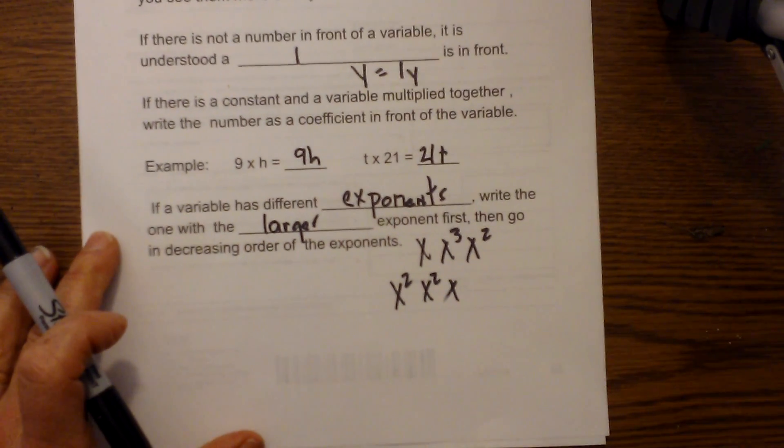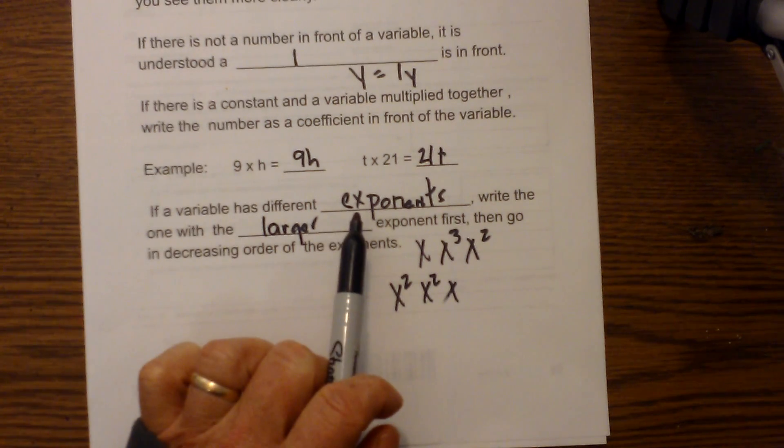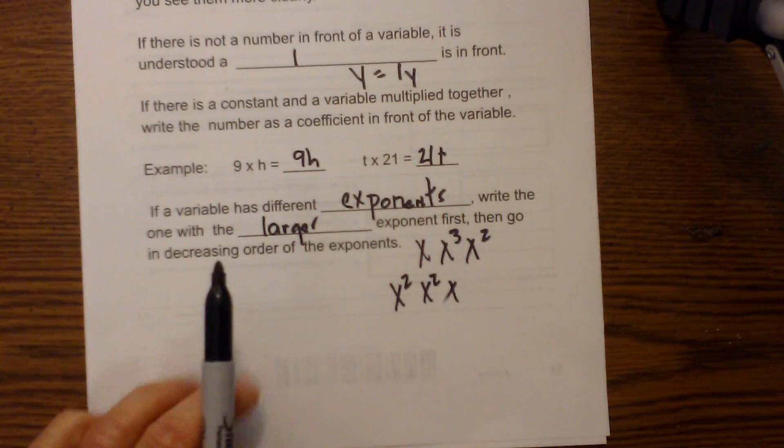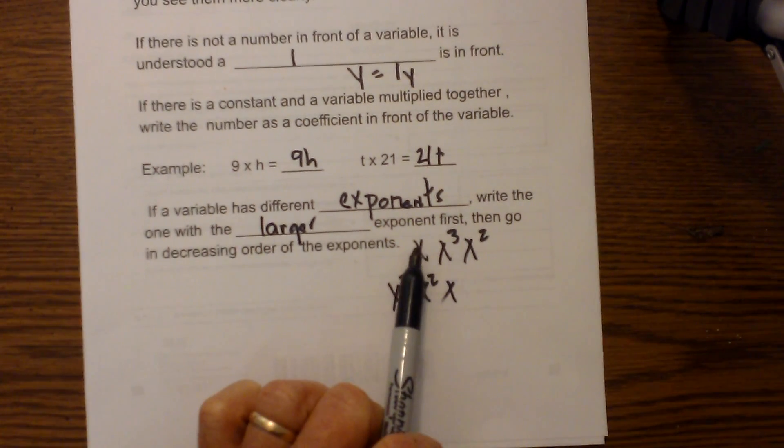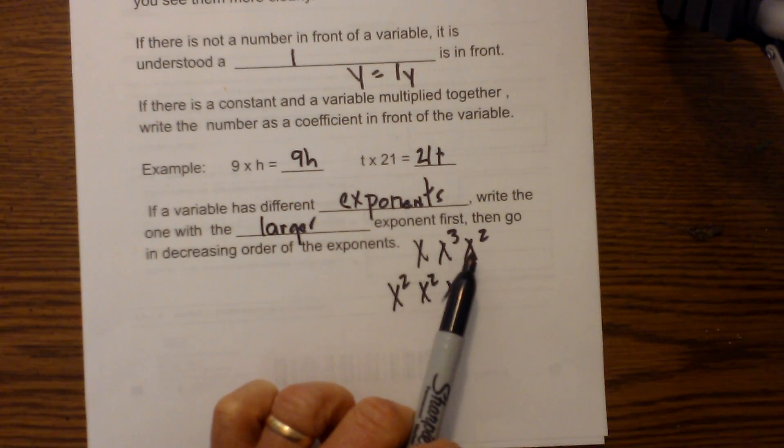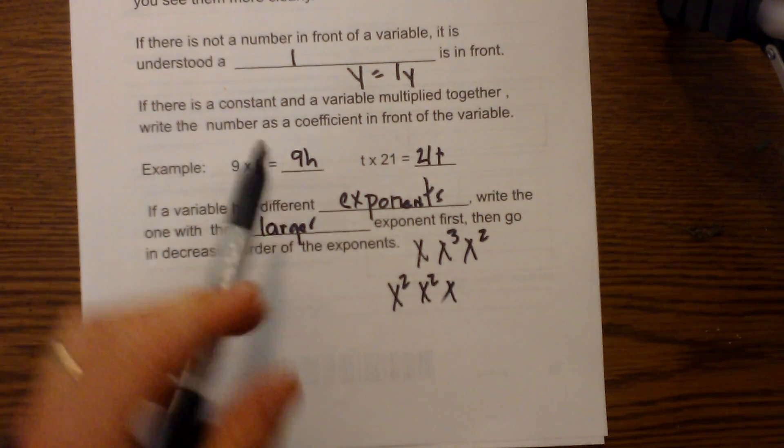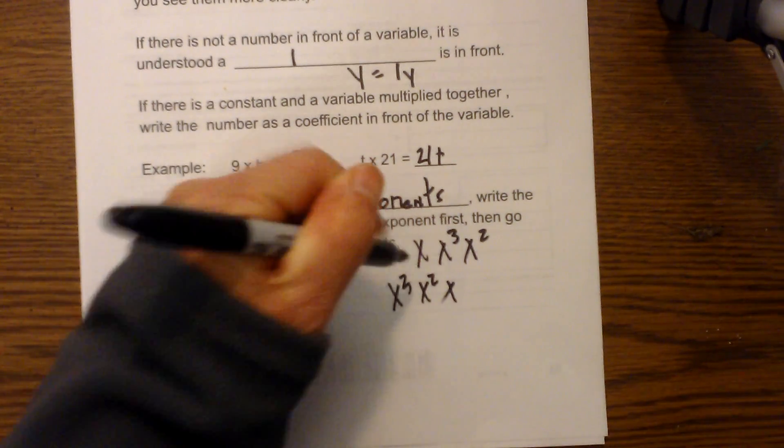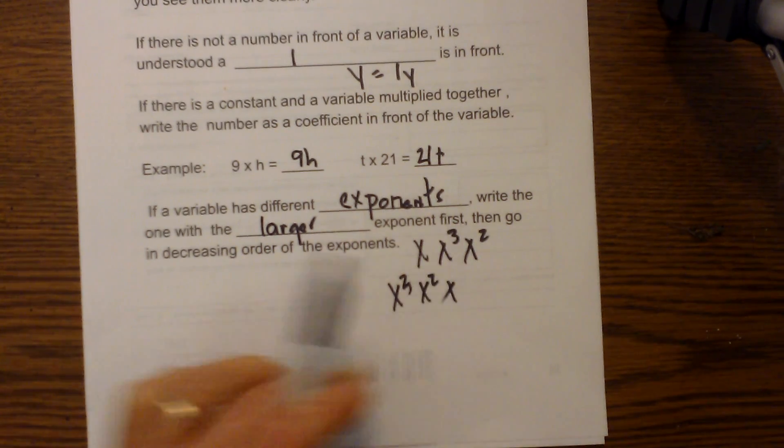And then finally, if the variable has exponents, write the one with the larger exponent first. And I have this written out, if you have x, x cubed, and x squared, you would write it out as x cubed first, x squared second, and then the x.